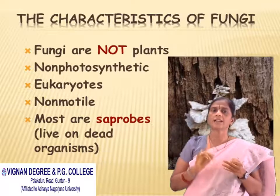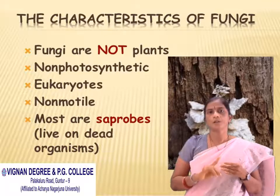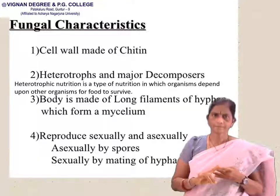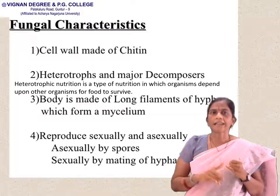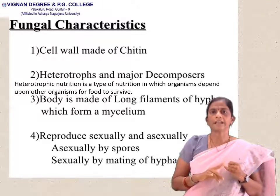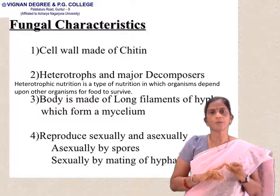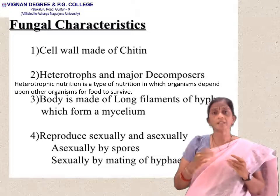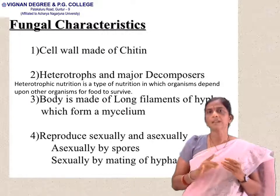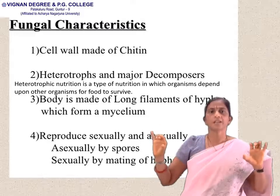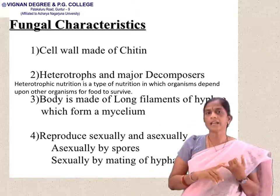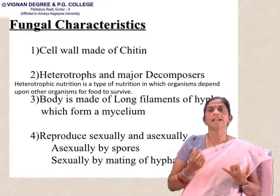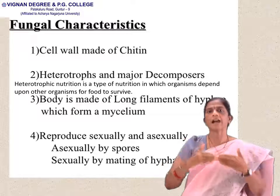They are eukaryotes. They are non-motile. Most are saprophytic, feeding on dead and decaying organic matter. The cell wall is made up of chitin. They are heterotrophs — organisms which depend upon other organisms for their food. Major fungi are decomposers. The body is made up of long filamentous hyphae which form a mycelium. Reproduction is by both sexual and asexual means; asexual is by spores and sexual is by mating of hyphae filaments.